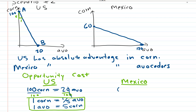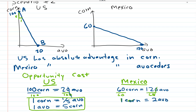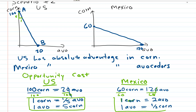For Mexico, they could choose 60 corn or go to the other extreme and choose 120 avocados. Dividing both sides by 60 gives us 1 corn = 2 avocados. Then dividing both sides by 2, we get 1 avocado = 1/2 corn. Those are Mexico's opportunity costs.